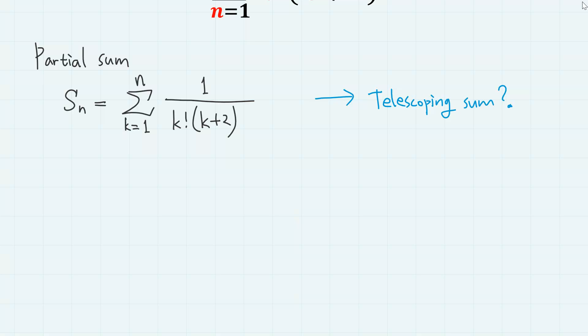Of course, the trick here is to somehow convert this into a telescoping sum, where middle terms can be cancelled out. In order to do that, we need some sort of fraction minus fraction form.